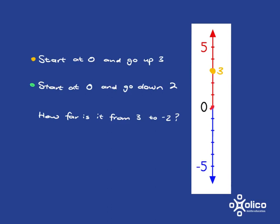If you start at 0 and walk down 2 steps, you end up over here and that is negative 2 on the number line.